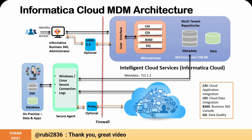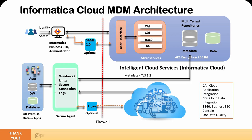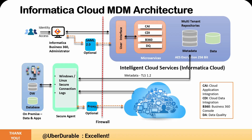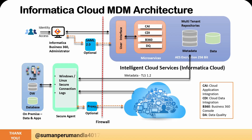The Informatica cloud services have their own user interface to show the various services, where each service is a functional unit. On the screen, we can see four microservices listed: CAI, CDI, B360, and DQ. CAI is Cloud Application Integration, B360 stands for the Business 360 console, and DQ stands for Data Quality. All these microservices need metadata, and that metadata will be stored in the multi-tenant repository, which is part of the Informatica cloud. This data is stored in encrypted format using AES 256-bit encryption.